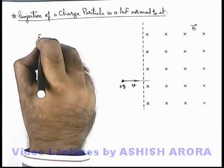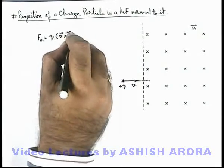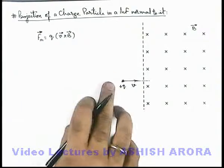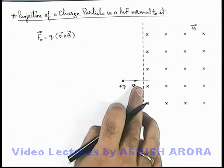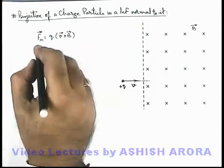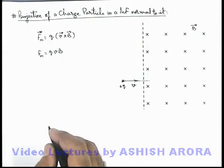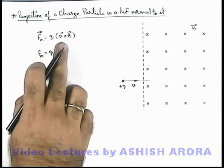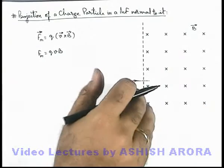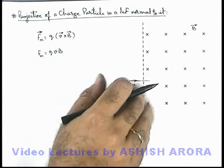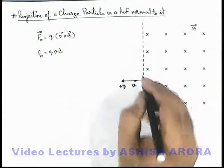We know that the magnetic force on the charged particle is given as q multiplied by v cross B. Here we can see that the direction of the velocity vector and the magnetic field are perpendicular, so the angle between v and B is 90 degrees. Therefore, the magnitude of this magnetic force we can write as qvB, and the direction can be calculated simply by the cross product.